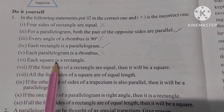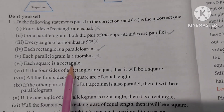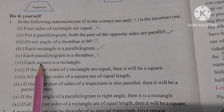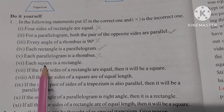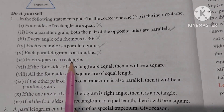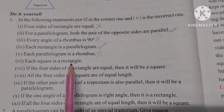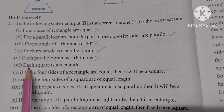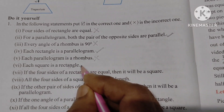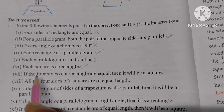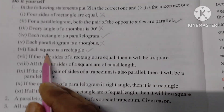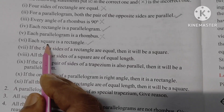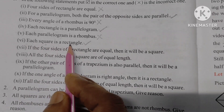Number 6: A square is a rectangle. A square has all the properties of a rectangle — opposite sides are parallel and equal, and all angles are 90 degrees. So a square is indeed a rectangle.